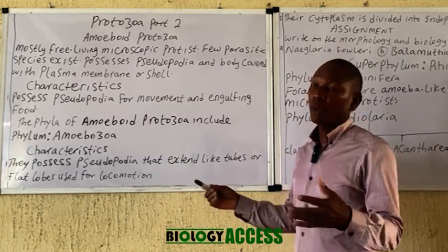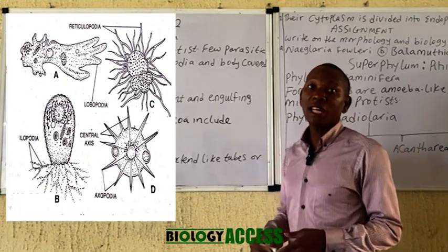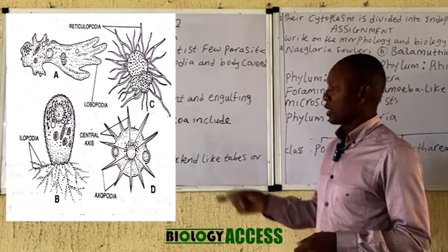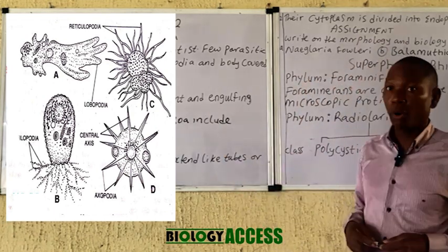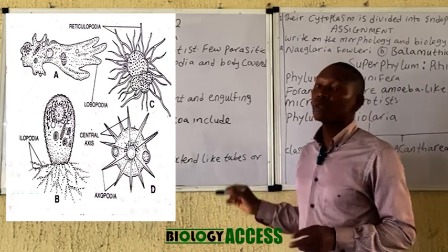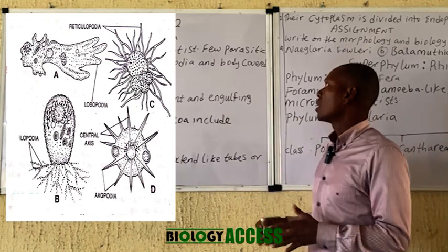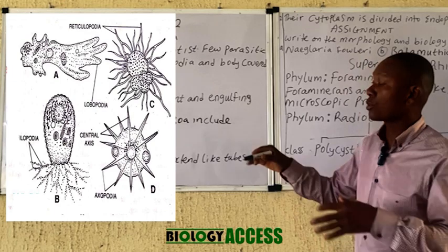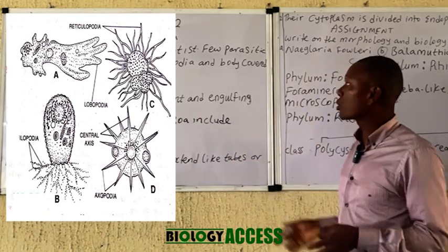The pseudopodia are of various types in the amoeboid protozoa, and they include the lobopodia, the filopodia, the axopodia, as well as the reticulopodia. A diagram of the various types is displayed on the board. Take note of the difference — the lobopodia is blunt and usually aids in engulfing food.